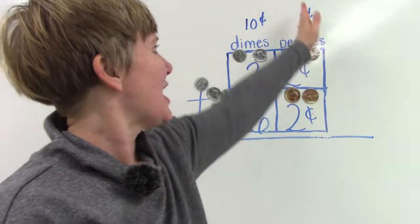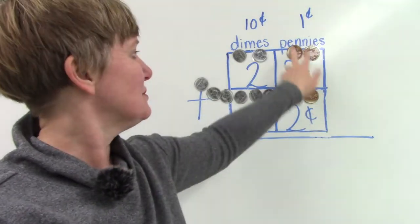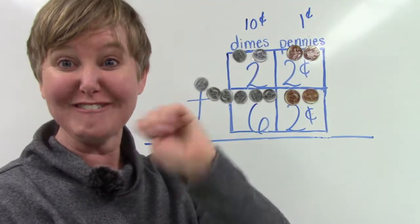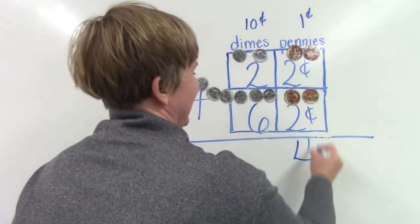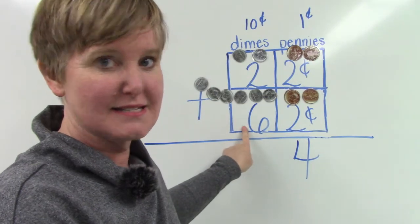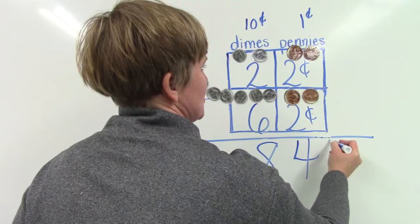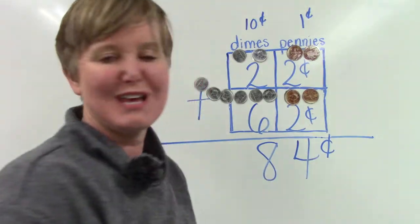We are going to start in our pennies column or the ones place. 2 plus 2 is 4. And then we have 2 plus 6. Six, seven, eight. 22 plus 62 is 84 cents.